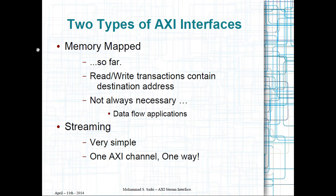So far in the previous two videos, whatever we talked about was only AXI memory mapped interfaces. In AXI memory mapped interfaces, whatever read or write transaction happens through the interface contains an address. The address indicates the destination to which the write transaction is going to be written, and the destination from which the read transaction is going to read the data.